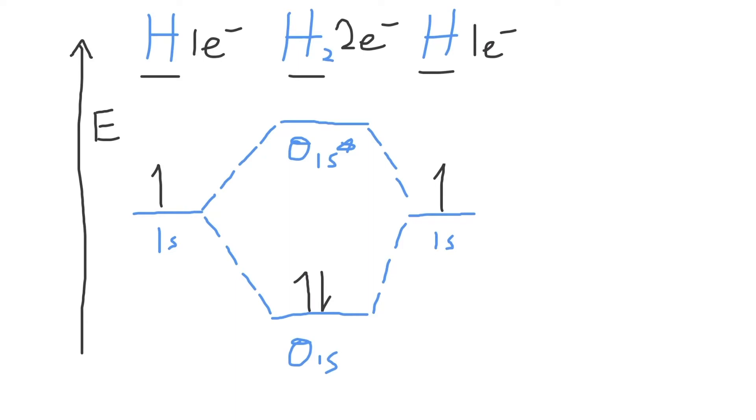Now what is the bond order for H2? The bond order describes the strength of the bond in this molecule and also directly tells you how many electron pairs are shared in the bond. The formula for bond order is one half of the bonding electrons minus the antibonding electrons.